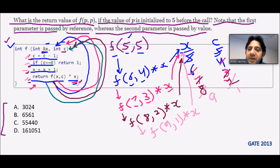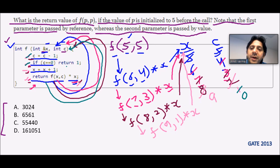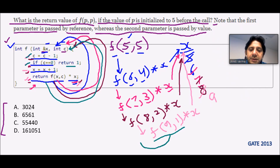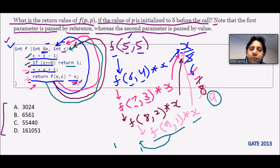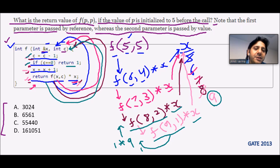Calling the function again: c = c - 1, so c becomes 0. Now if c == 0, return 1. So this function call returns 1. Coming back, we multiply with x — the current value of x is 9, so it gives 1 × 9 = 9. Then coming back to the previous call, the result so far is 1 × 9, and it multiplies with x again — the current value of x is still 9.